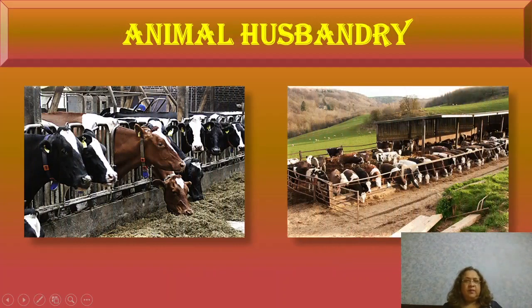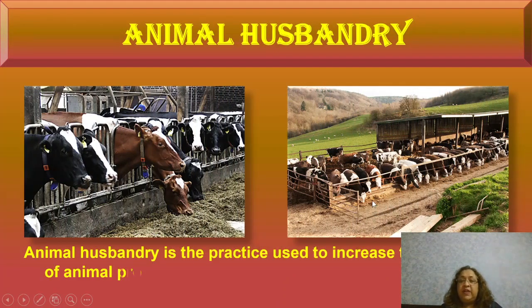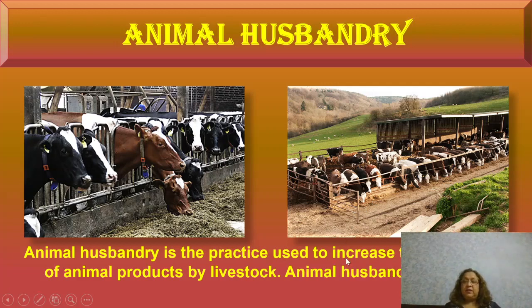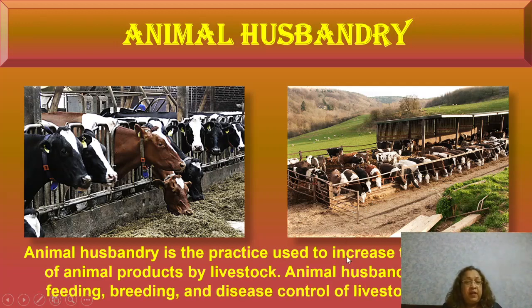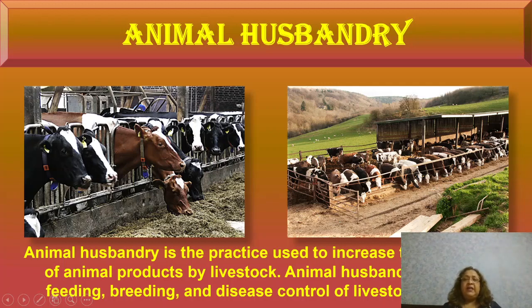We begin with animal husbandry. Animal husbandry is the practice used to increase the production of animal products. It includes the feeding, breeding (that is reproduction), and disease control of livestock animals. As you can see in the pictures, how clean and neatly they are kept, and so there is less chance of them getting any disease.